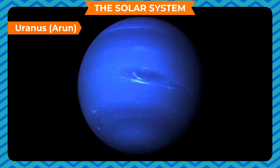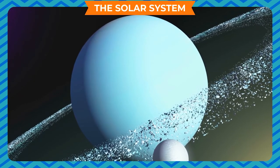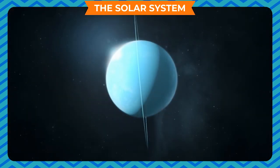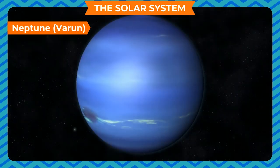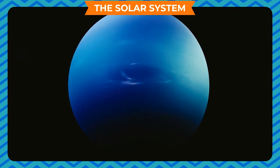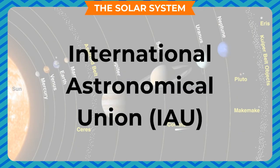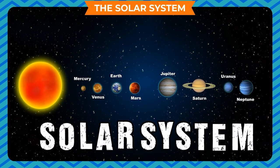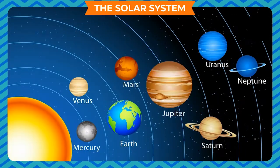Uranus (Arun): It is the seventh planet from the sun. It is a large planet very far away from the sun. It appears green when viewed through a telescope. It cannot sustain life due to its very low temperature. Neptune (Varun): It is the eighth planet from the sun, also very cold like Uranus. Until 2006, there were nine planets in the solar system. Pluto was the farthest planet from the sun. In 2006, the International Astronomical Union adopted a new definition of a planet, and Pluto does not fit in this definition. So it is no longer considered a planet of our solar system.